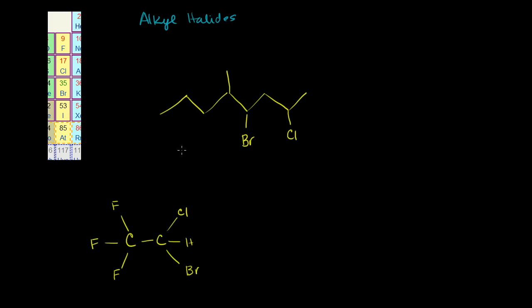So I've drawn some alkyl halides here and let's think a little bit about how to name them. Like we name all of our organic molecules so far, you look for the longest chain first. The longest chain that contains a double bond, if there is one. In this case, there is no double bond. So the longest chain looks like this.